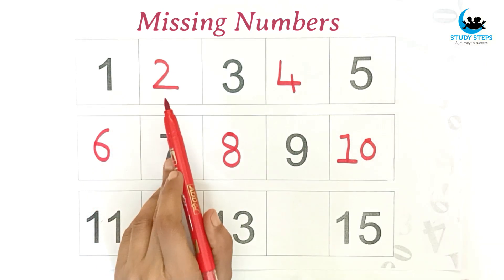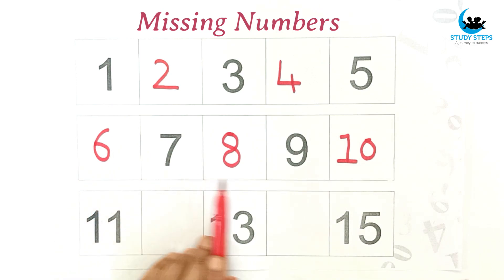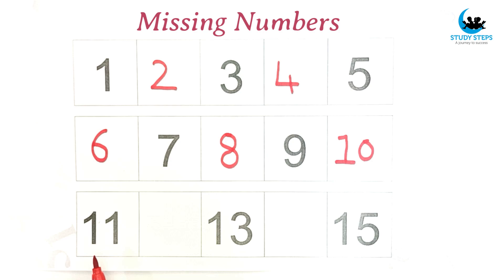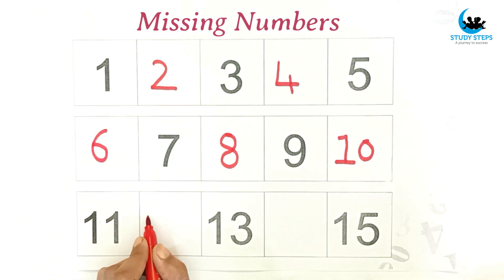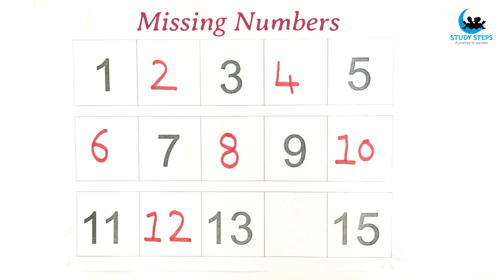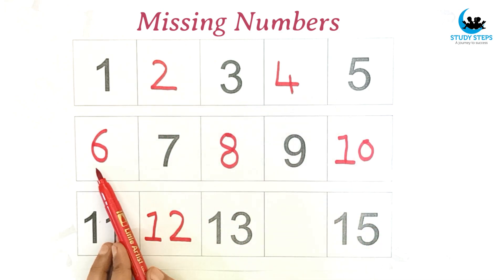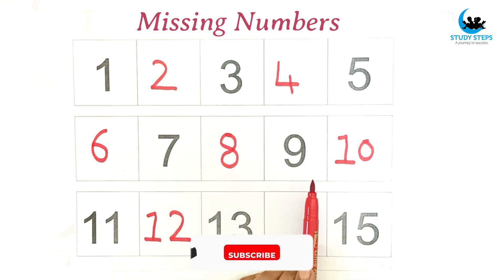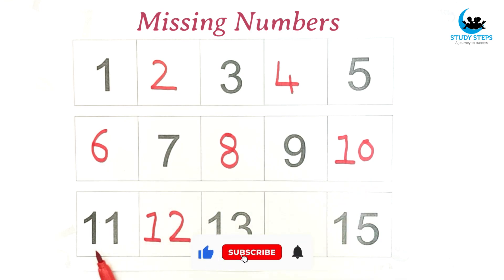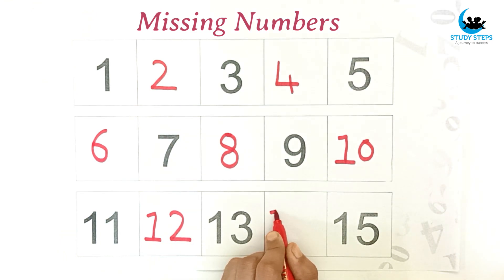One, two, three, four, five, six, seven, eight, nine, ten, eleven — which number comes after eleven? Twelve. One, two, three, four, five, six, seven, eight, nine, ten, eleven, twelve, thirteen — which number comes after thirteen? Fourteen.